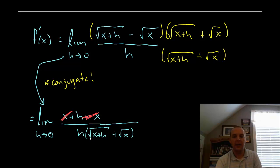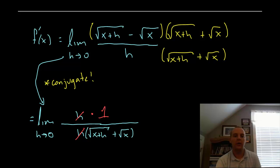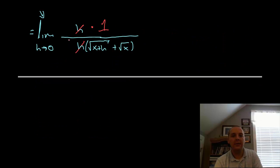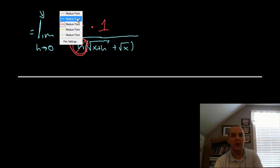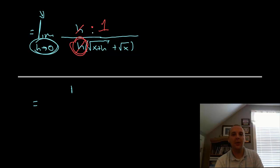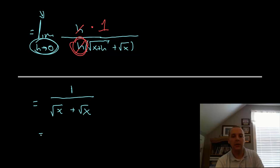Notice you have x and minus x, so they cancel, leaving h divided by h times the quantity in parentheses. The h's cancel, leaving 1 in the numerator. That h that was causing division by zero is now gone. So I let h equal zero and get 1 over the square root of x plus the square root of x, which is 1 over 2 times the square root of x.